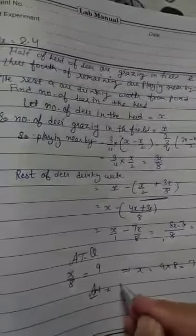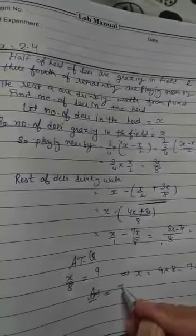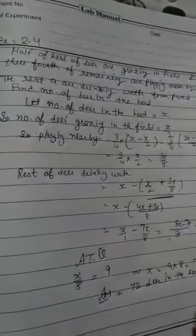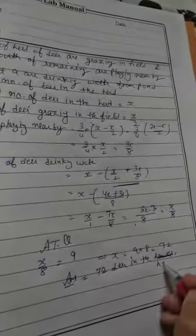So our answer is there are total 72 deer in the herd. That is our answer.